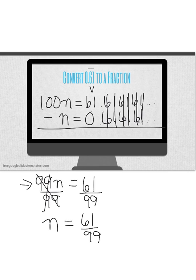99 divided by 99 leaves me with 1n and my fraction is 61 over 99. Now I don't believe that that simplifies. So you have just converted 0.61 repeating to its fraction form 61 over 99.